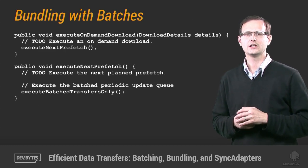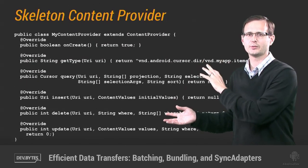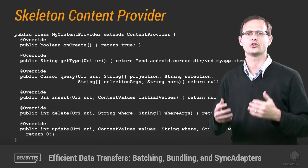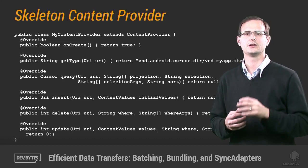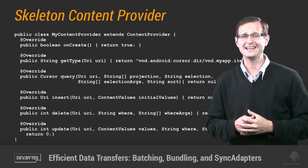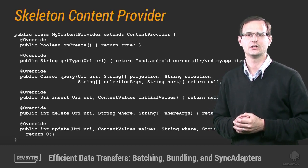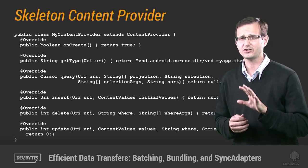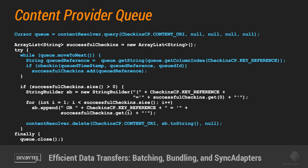The best solution is using a content provider. This skeleton implementation shows the basic query, insert, delete, and update methods that you would need to implement. A content provider can be backed by any data store, but most commonly an SQLite database. Rather than implementing a batch queue, you can insert data into your content provider, and then when your next transfer begins, query it for pending transfers and remove successfully transmitted data from that queue.